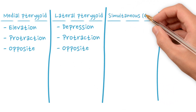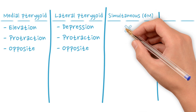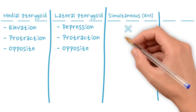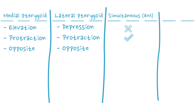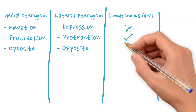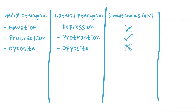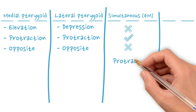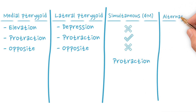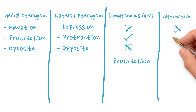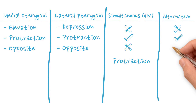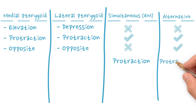When both pterygoid muscles act simultaneously, elevation and depression cancel out each other, and the only resulting action is protraction. When the muscles act alternately, elevation and depression again cancel out, but the movement to the opposite side does not cancel out because only the muscles of the same side are acting at one time, resulting in protraction to the opposite side.